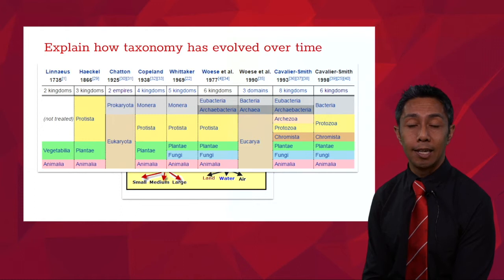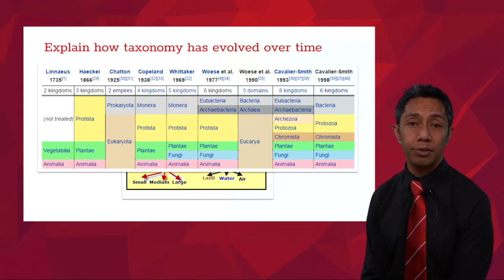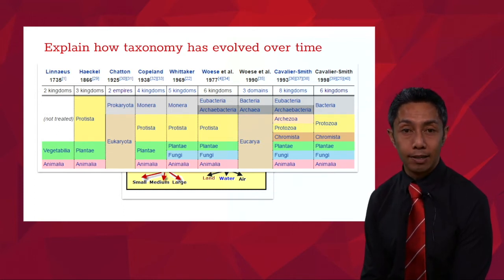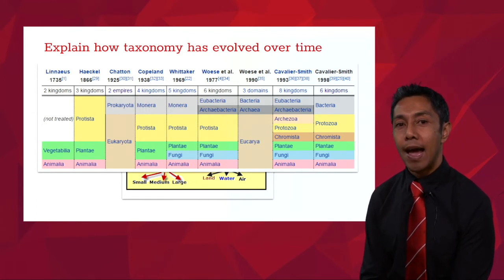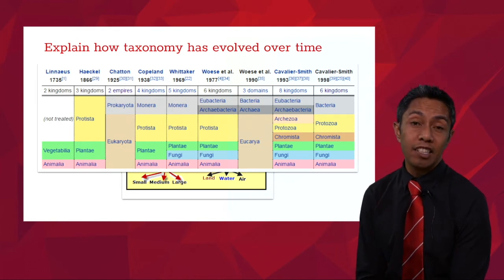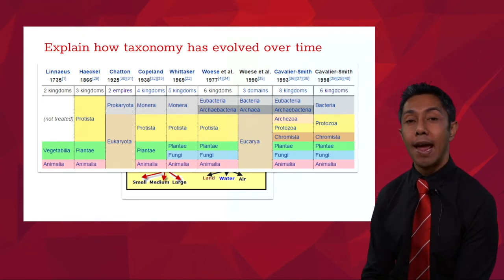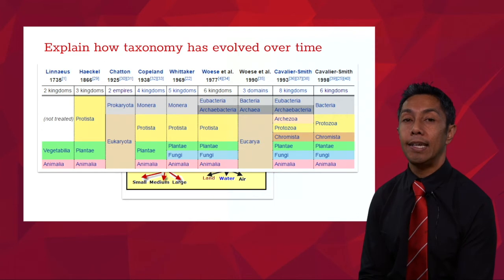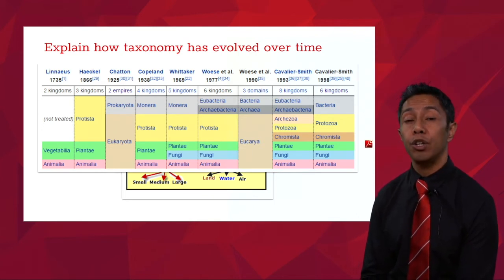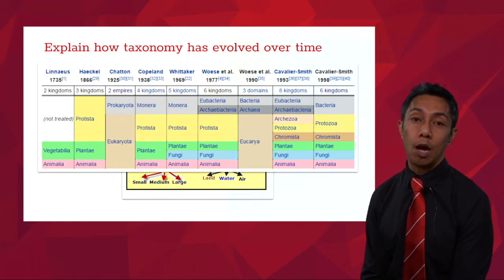Linnaeus, when he developed his system back in 1735, was very much inspired by Aristotle's system of classifying things into vegetabalia or animalia — the Latin names for the plant kingdom and animal kingdom. Haeckel then said there's more to life than just plants and animals; there are microscopic living things we can only see with a microscope, which he called protista. Chatton was the first to use cellular methods, describing life as either prokaryotic or eukaryotic — whether an organism's cells had a nucleus or whether its DNA was just floating about in the cell.